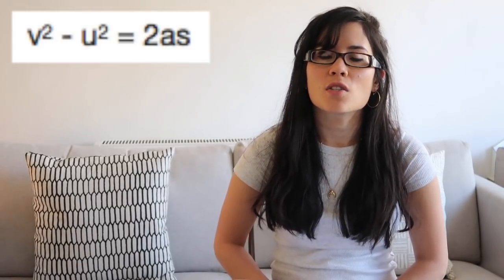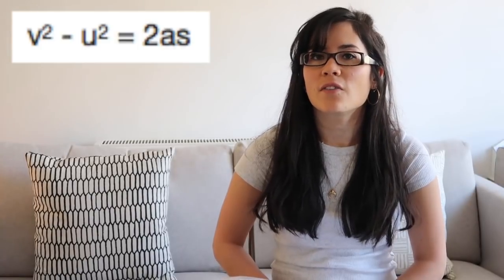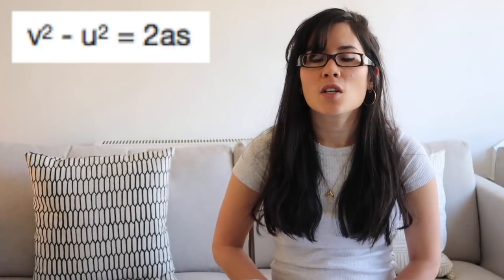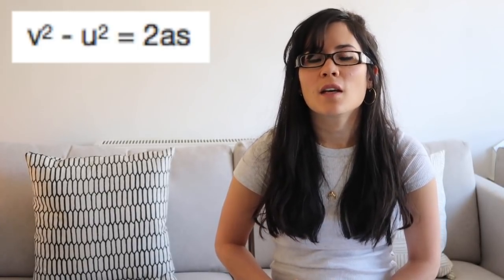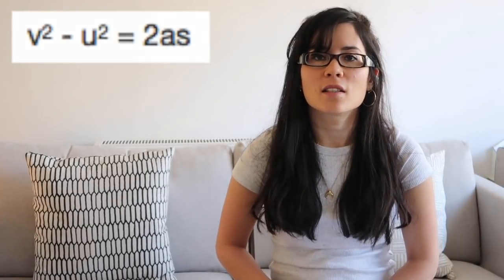There might be a sneaky SUVAT question. What's the equation linking final velocity, initial velocity, acceleration and distance travelled? That's V squared minus U squared equals 2AS, where V is the final velocity, U is the initial velocity, A is the acceleration and S is the distance.